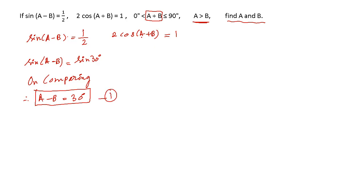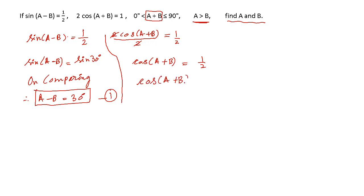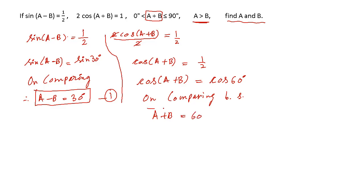Now solving the second equation: 2·cos(A + B) = 1. Dividing both sides by 2 gives cos(A + B) = 1/2. From the table, cos equals 1/2 at 60 degrees, so cos 60° = 1/2. On comparing both sides, A + B = 60°. Let's call this equation 2. Now we have a system of two linear equations in two variables, A and B.